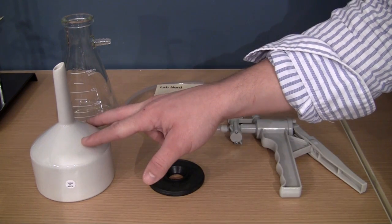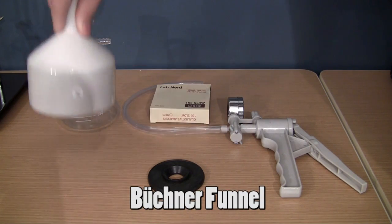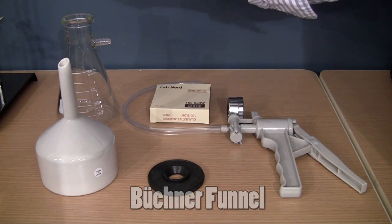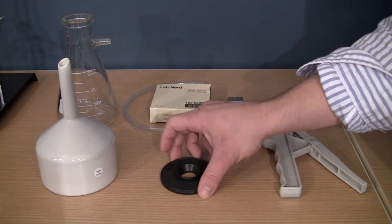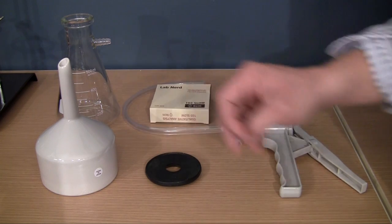This thing right here is called a Buchner funnel, and this is essentially going to go inside here, and it just makes pouring the mixture in a little bit easier. And aside from that, you have a rubber stopper, and this is just to make a good seal between the funnel and the flask.